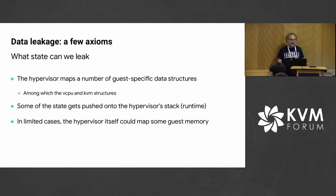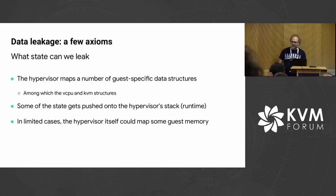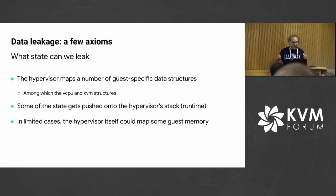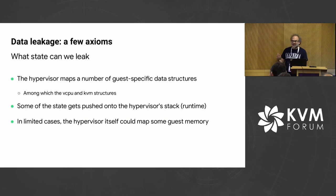So what can you actually leak? The hypervisor maps a bunch of guest-specific data structures, and probably the most interesting one is the vCPU structure. The KVM structure is also interesting, but the vCPU one is really the juicy one — it has all the registers and stuff. Also, some guest state gets pushed onto the hypervisor stack at runtime because we write things in a high-level language. In limited cases, the hypervisor itself could map some guest memory, but that's pretty rare.